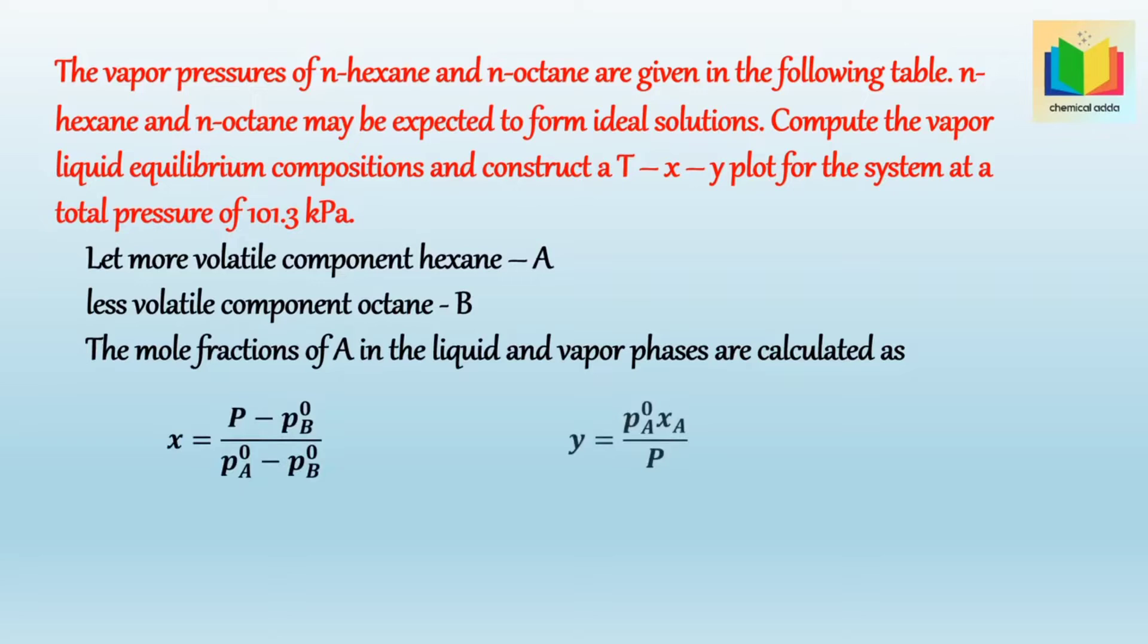Where X is the mole fraction of hexane in liquid phase and Y is the mole fraction of hexane in vapor phase. PA0 is the vapor pressure of hexane, PB0 is the vapor pressure of octane, P is the total pressure. So using this equation we get X and Y values at a specific temperature.